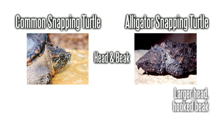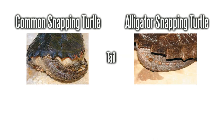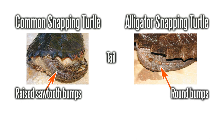Alligator snappers have large heads and more prominent hooked beaks than common snappers. On their tails, common snappers grow raised, saw-toothed bumps. In contrast, alligator snappers have round bumps.